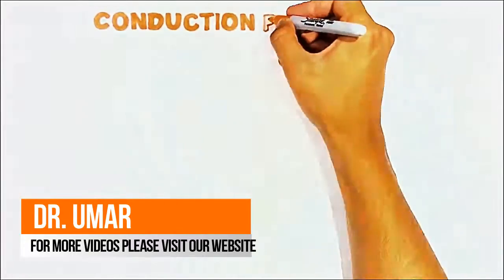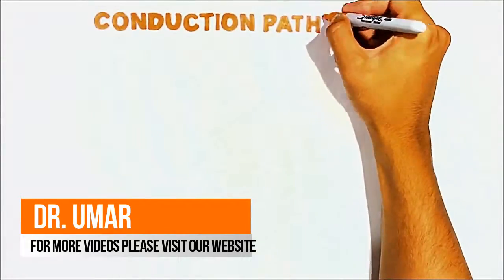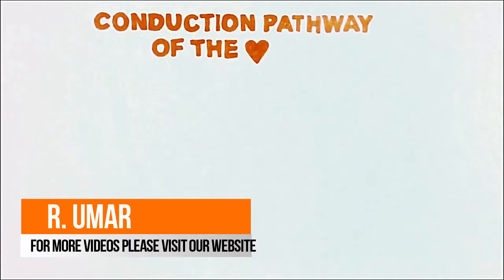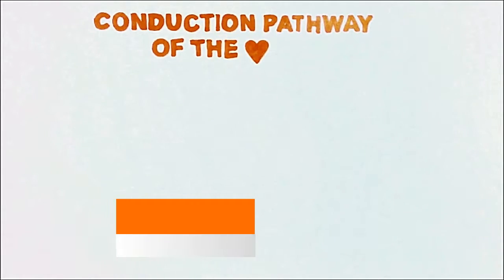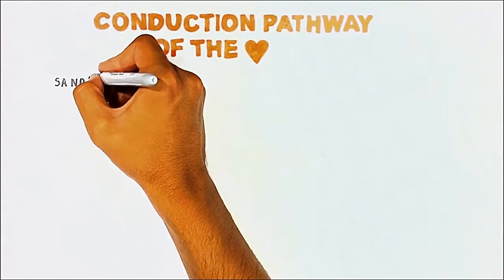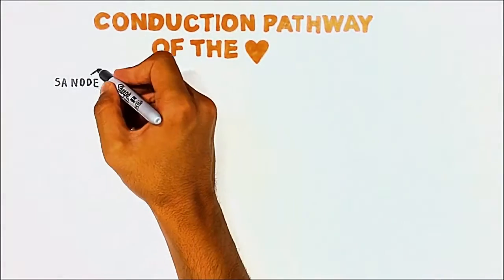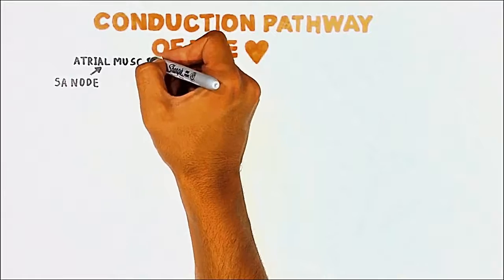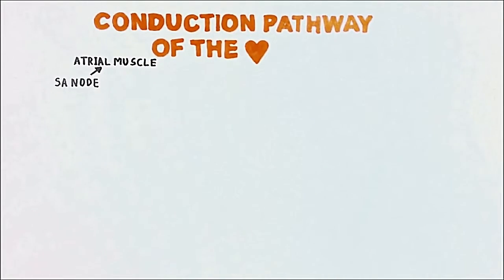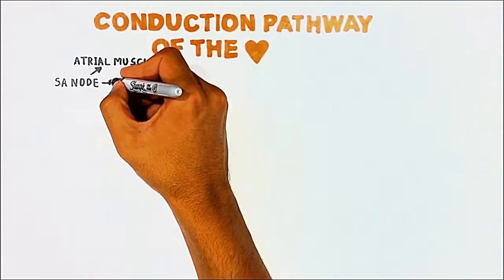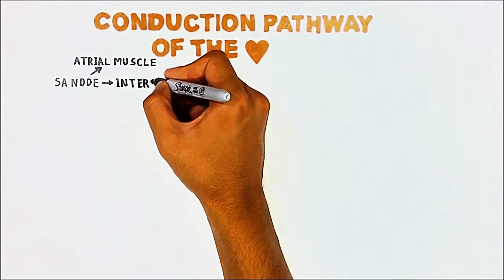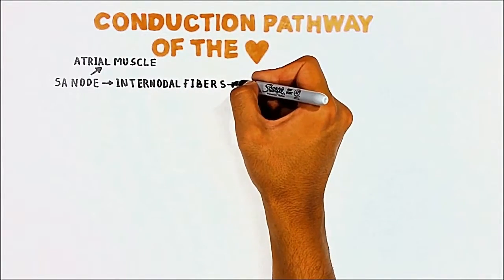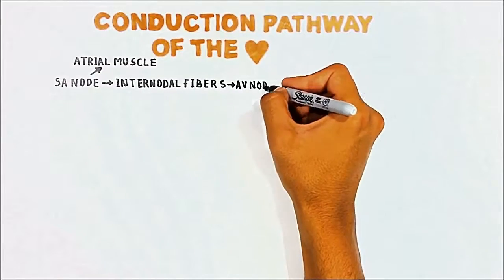In this video we will talk about the conduction pathway of the heart. In a nutshell, the electrical signal is first generated in the sinoatrial node in the right atrium. Next, the electrical signal spreads through the heart's right and left atrium and causes the atrium to contract. Then passing through the internodal fibers, the electrical signal reaches the atrioventricular node.